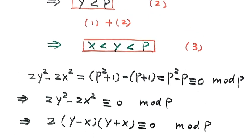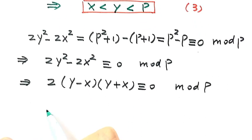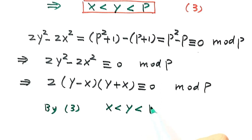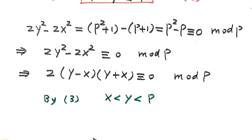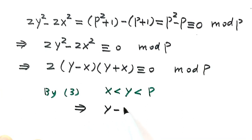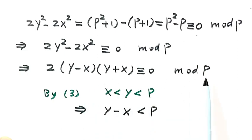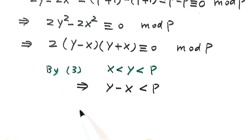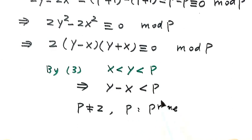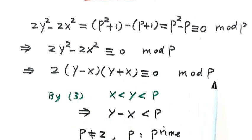By Result 3, x less than y less than p, so y minus x is also less than p. That means y minus x is not divisible by p. Also, since p is a prime greater than 2, p is not equal to 2, so 2 is not divisible by p either. Therefore, only y plus x must be divisible by p.